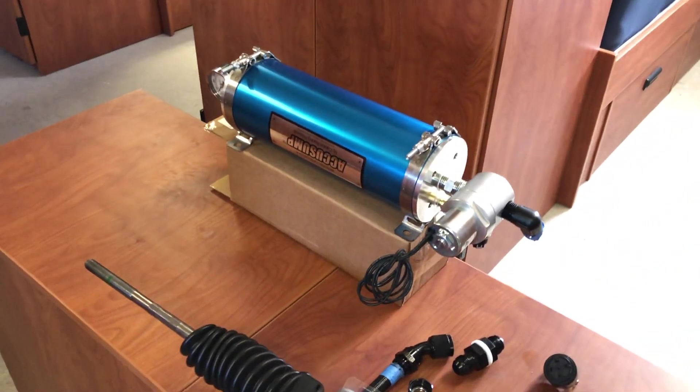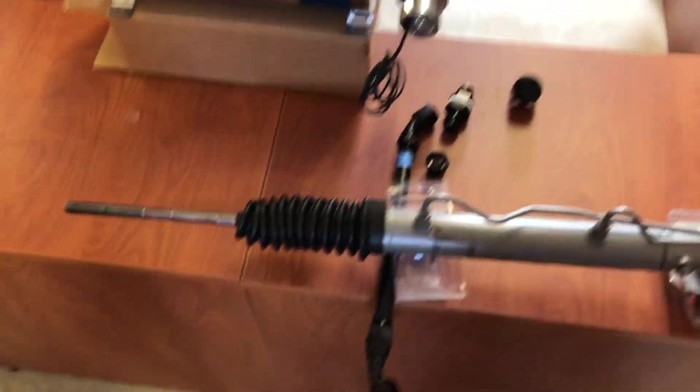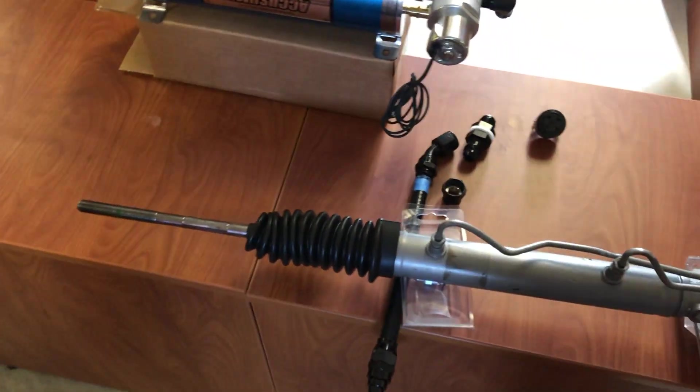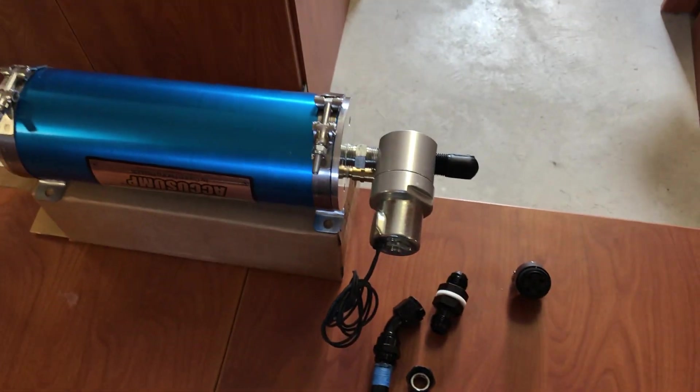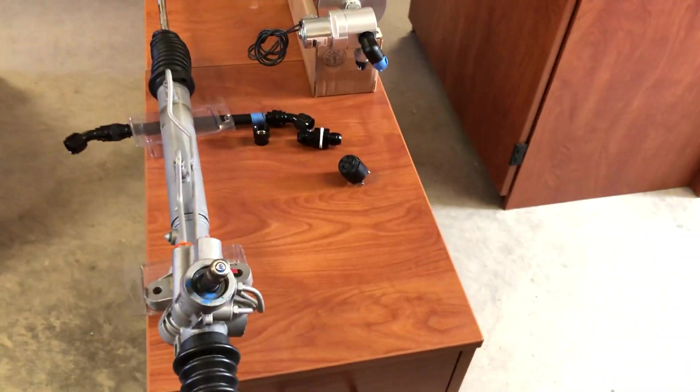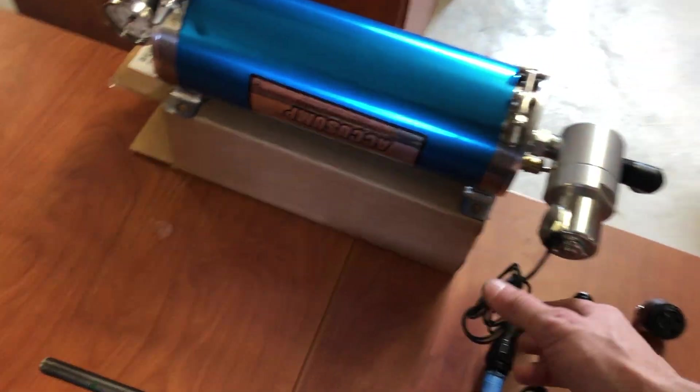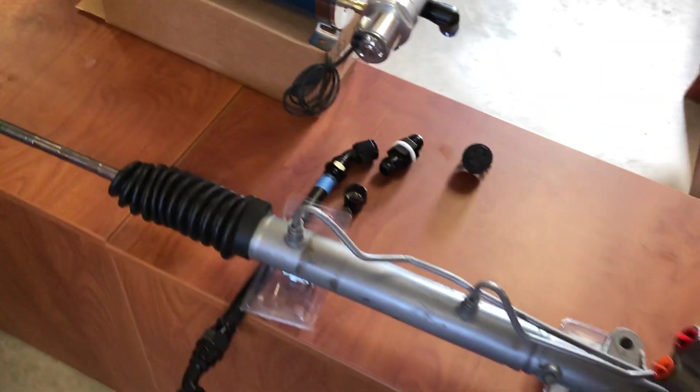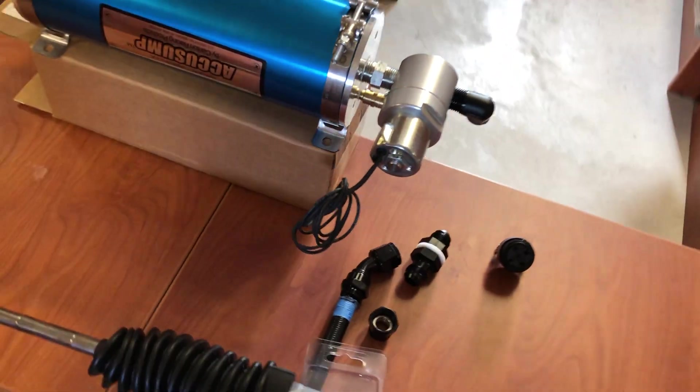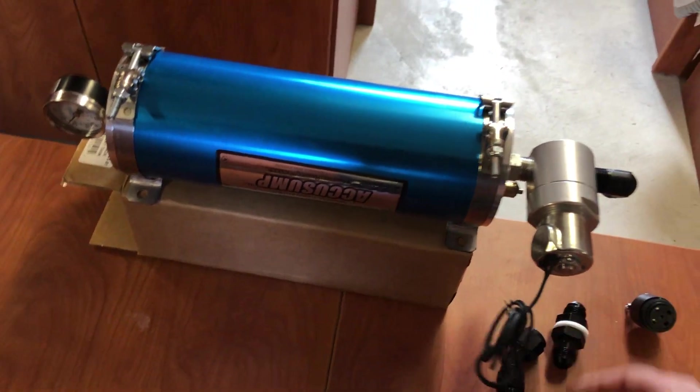I'm going to have to raise up the AccuSump off the floor. It'll be mounted kind of exactly how you see it here on the passenger floorboard, right where their feet would be, kind of a little beyond where your feet are. That's basically all there is to it. You just gotta wire it up to a switch as well.